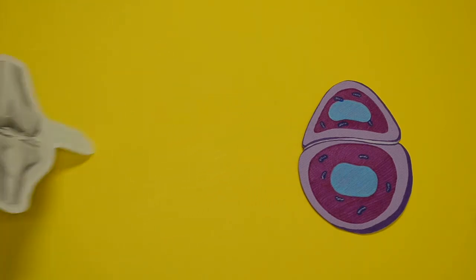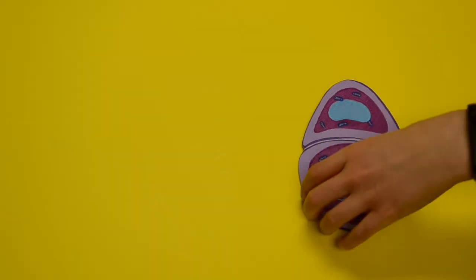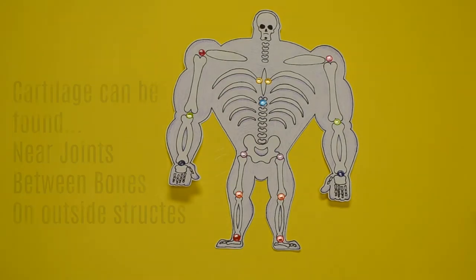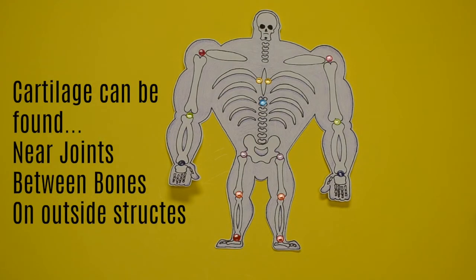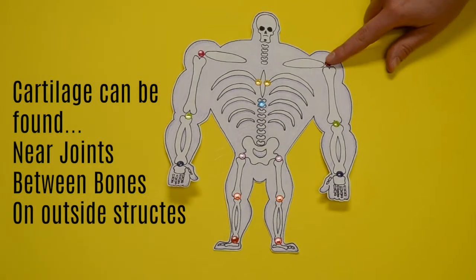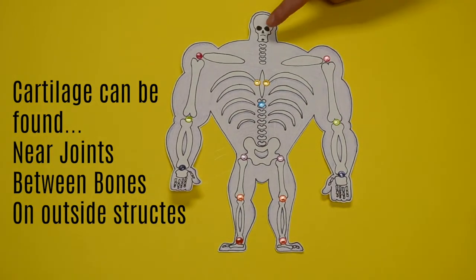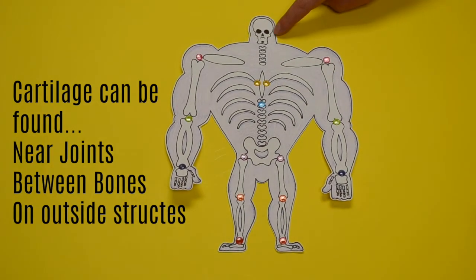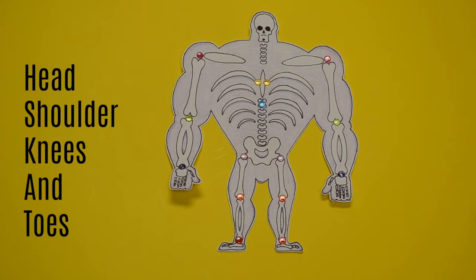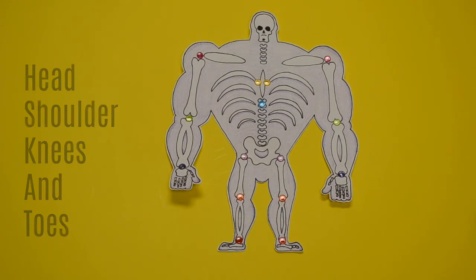Here is a picture of all the areas where cartilage can be found. We can find cartilage all over our body, near joints, between bones, and also on outside structures such as the nose, ears, and believe it or not our larynx. Head, shoulders, knees, and toes are all places where cartilage can be found.